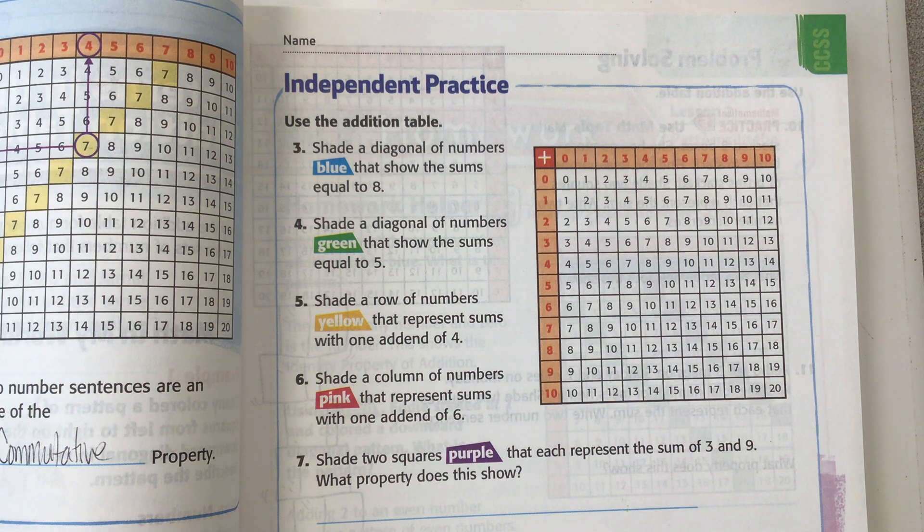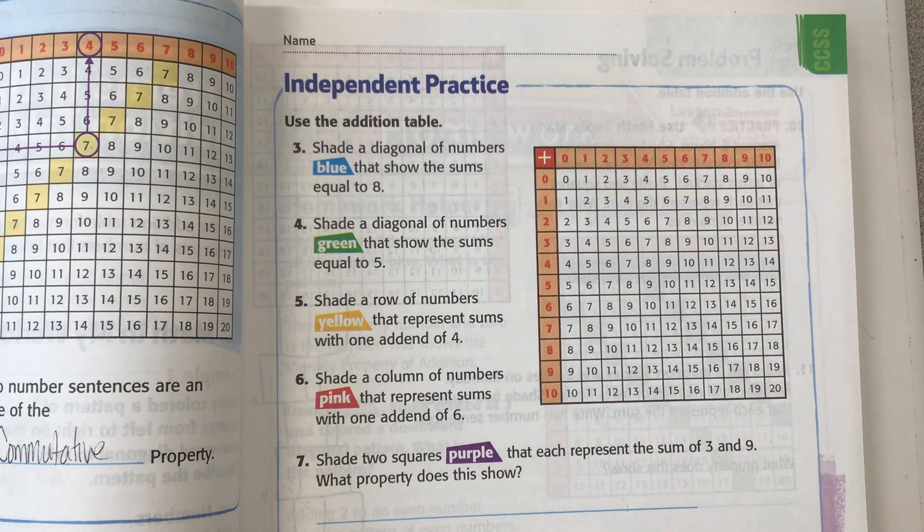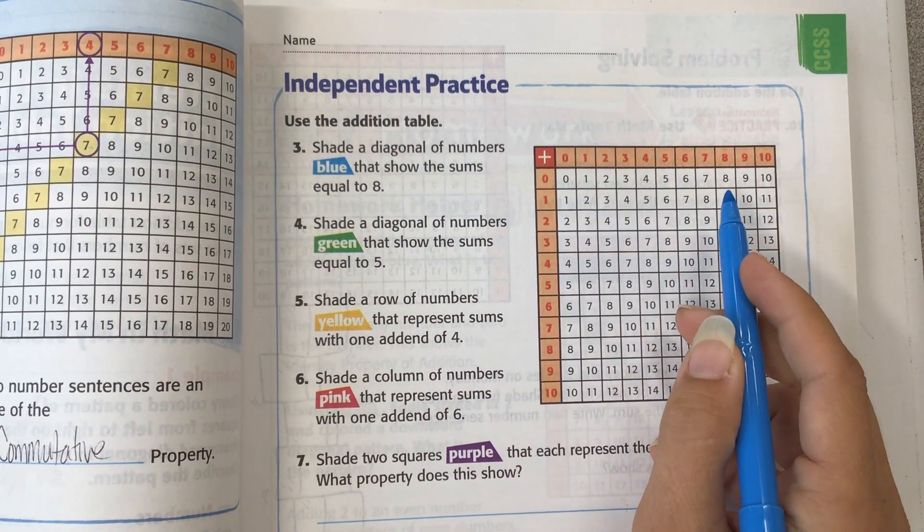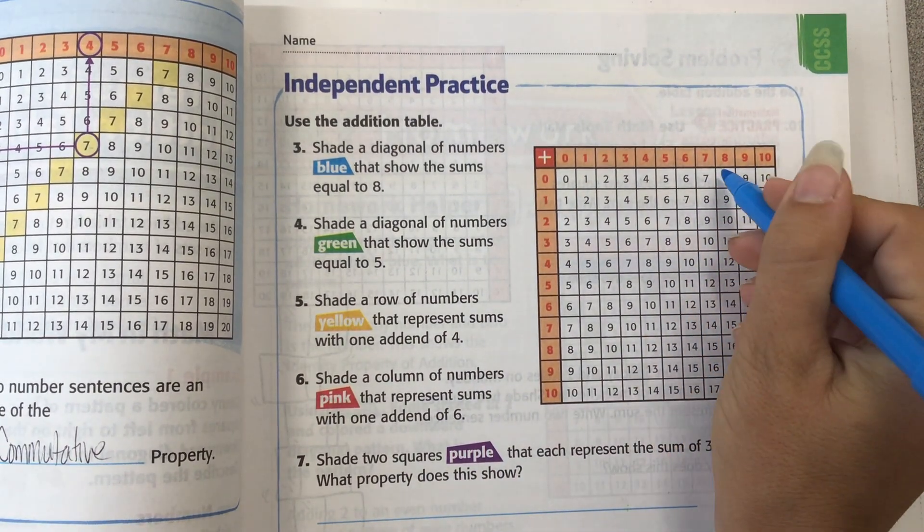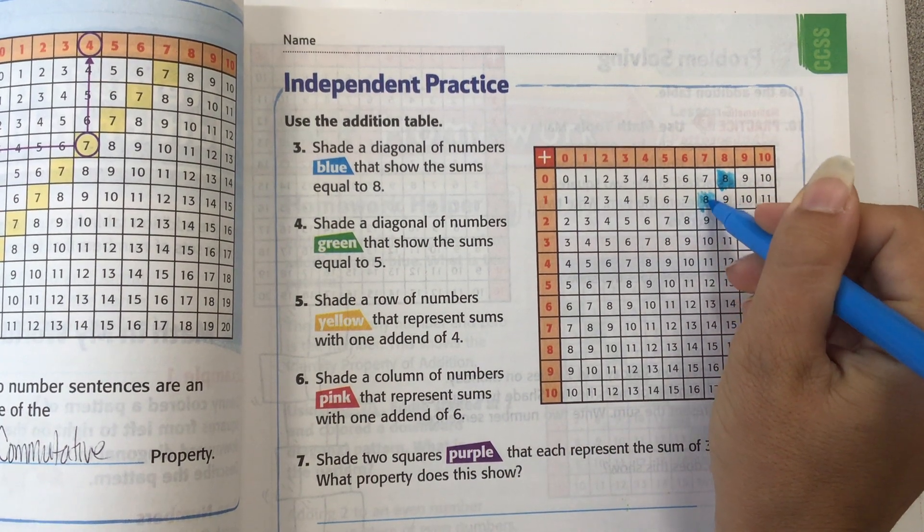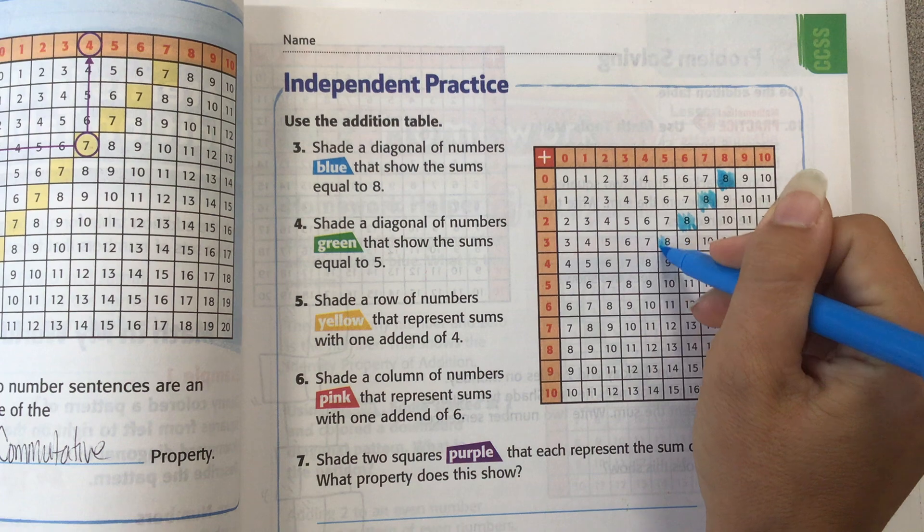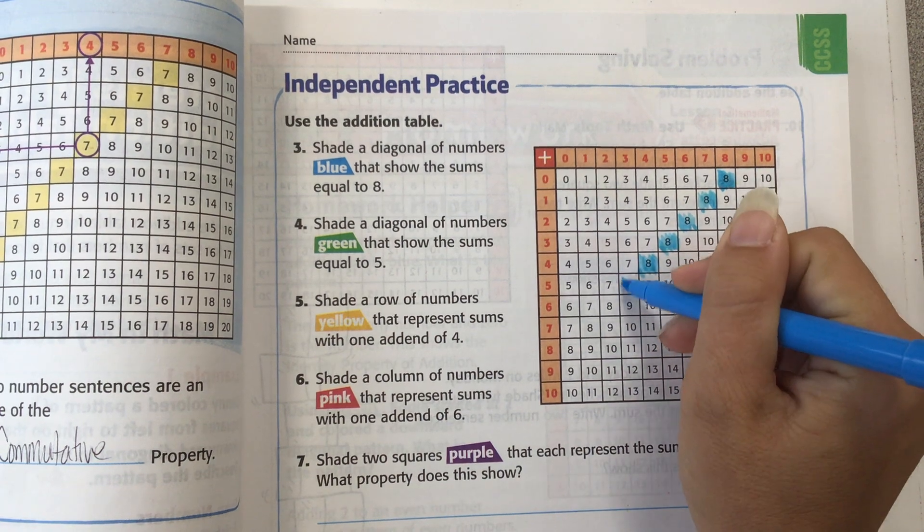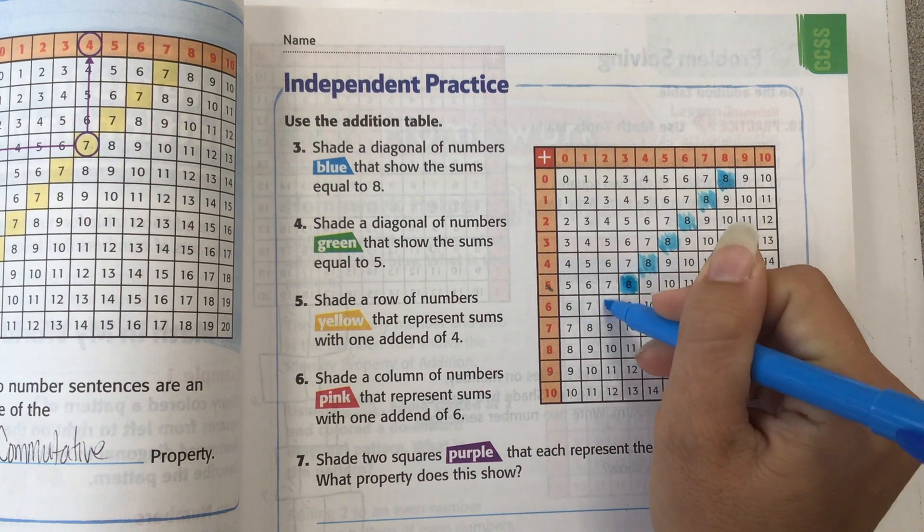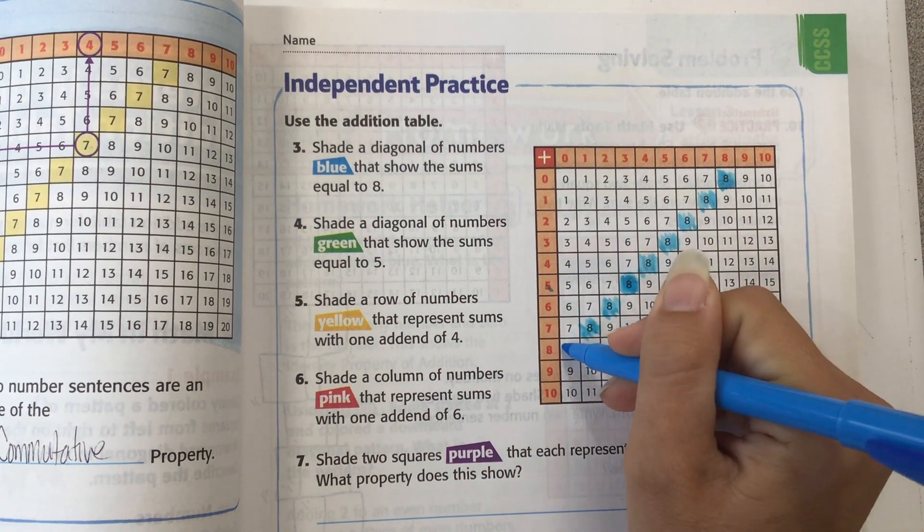Use the addition table. Shade a diagonal of numbers blue that show the sums equal to eight. I'm going to take my blue, and this is an addition table. We know it's addition because it has this plus sign right here. And we're going to shade all of the eights blue, and it says it's diagonal, so I already know I'm going to go down like this. I could stop here and say three plus five is eight, and we match them. It's finding a pattern.